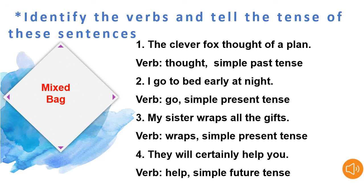Children, I hope you have understood all the rules for simple present tense, simple past tense, and simple future tense. Now, are you all ready to do an exercise on mixed tenses? Let's see the question: identify the verbs and tell the tense of these sentences. The first one is: the clever fox thought of a plan. Can you identify the verb in it? It is thought, and the tense is simple past tense.